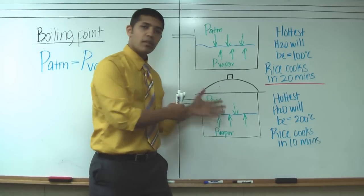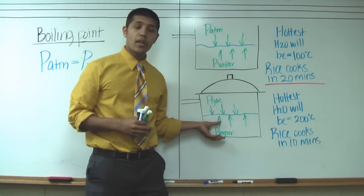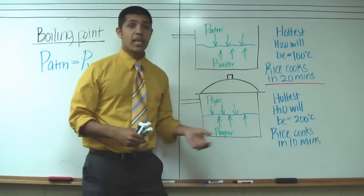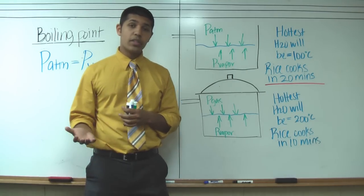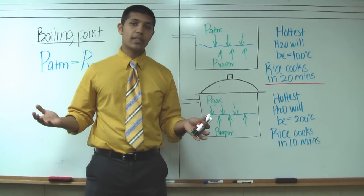So high pressure means a higher temperature of the water means a faster cooking time, and on the inverse, in a mountain, a low pressure means a lower achieved temperature and a longer cooking time.